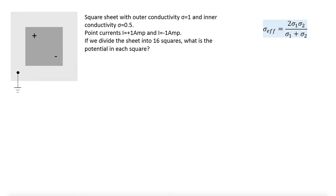So this is our example problem. We have here a square sheet. The outer part here, which is in light gray, has conductivity of sigma equals one. The inner part has conductivity sigma equals one half.